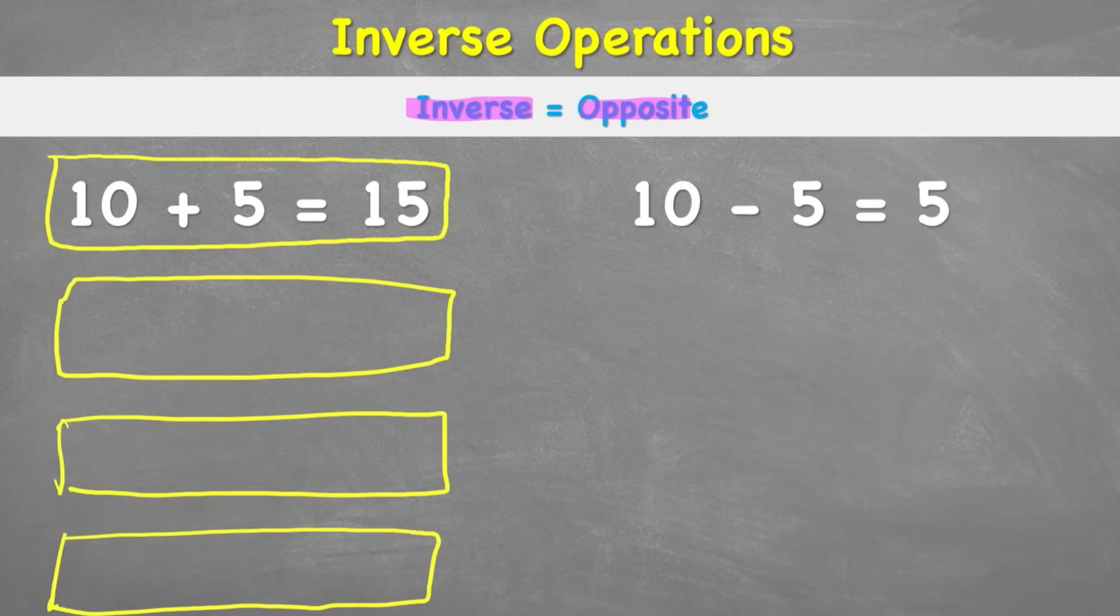So we have 10 plus 5 equals 15. But using the exact same numbers, we can do 3 more number sentences. For example, I could just move the 10 and the 5 the other way around. I could say 5 plus 10 also equals 15. That's another number sentence using the same numbers.